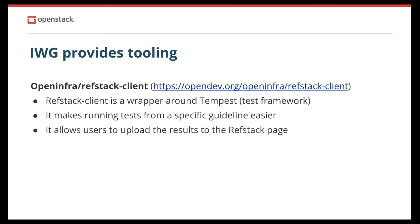IWG provides tooling to make running as well as visualizing the results of interoperability tests as easy as possible. For example, we provide a project called RefStack Client. It makes running tests of a particular guideline easier. RefStack Client is basically a wrapper around Tempest, which is a framework used to validate OpenStack deployments across the whole community. RefStack Client also allows users to upload the results to the RefStack page, which will be shown on the next slide.